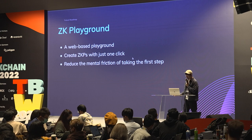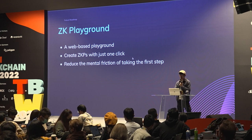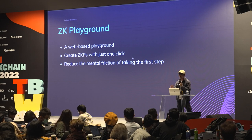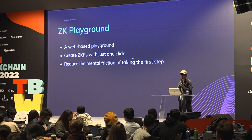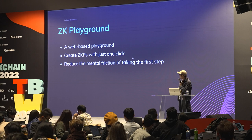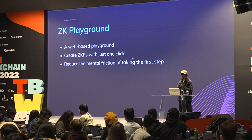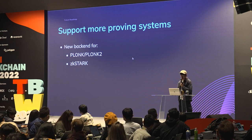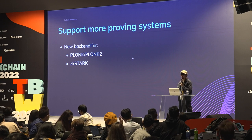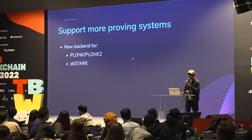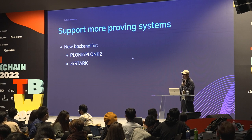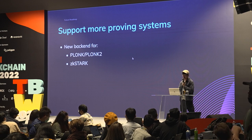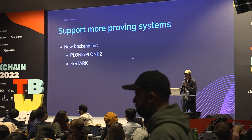With a ZK playground, we can reduce developers' mental friction of taking the first step — because the first step is always the most difficult. Finally, we want to support more proving systems. Aside from R1CS, there are now many new proving systems such as PLONK and PLONK 2, or PLONKY-style systems, and we want new backends for those as well as ZK STARK support.